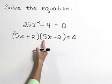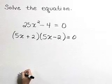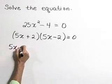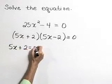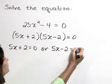So at this point, if the product of two things is equal to 0, then we know that one or the other or both is 0. So let's set each of these linear pieces equal to 0. 5x plus 2 is equal to 0 or 5x minus 2 is equal to 0.